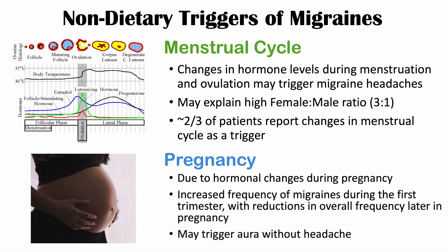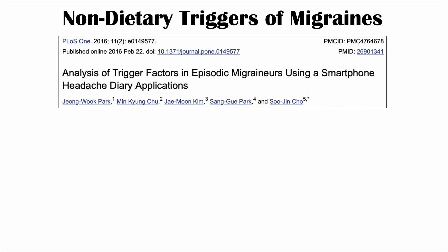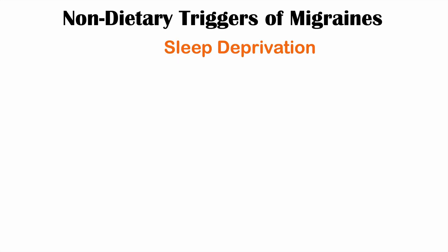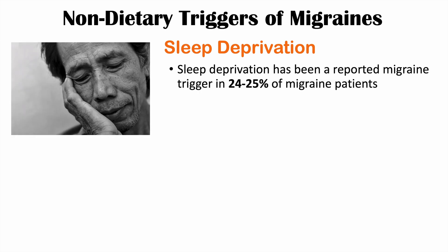It also appears that pregnancy triggers aura without headaches as well. The next set of triggers comes from the article entitled 'Analysis of Trigger Factors in Episodic Migrainers Using a Smartphone Headache Diary Application.' Sleep deprivation has been reported as a migraine trigger in about a quarter of migraine patients.